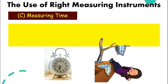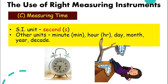How about time? The SI unit for time is the second. However, there are other units like minute, hour, day, month, year, and also decade. What is a decade? One decade is 10 years. So if somebody tells you they have lived four decades, that means they have lived around 40 years.